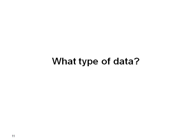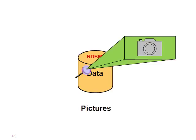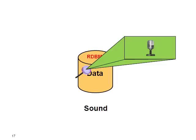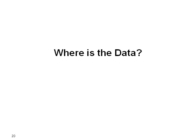So what type of data can you manipulate with an Oracle Database? Well it can be text, it can be numbers, it can be pictures, it can be movies, sound, any type of file and virtually any type of data.